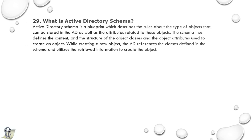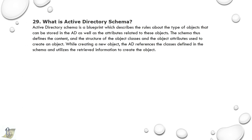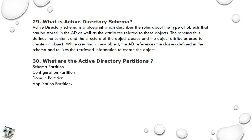29th question: What is Active Directory Schema? Active Directory Schema is a blueprint which describes the rules about the type of objects that can be stored in AD, as well as the attributes related to those objects. The schema defines the content and structure of the object classes and object attributes used to create an object. 30th question: What are the Active Directory partitions? Schema partition, configuration partition, domain partition, and application partition.